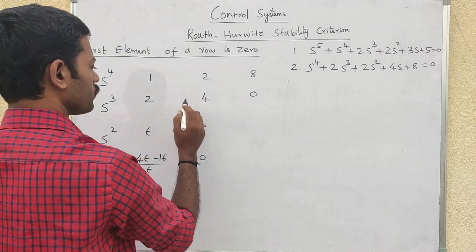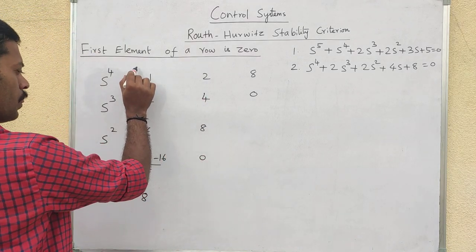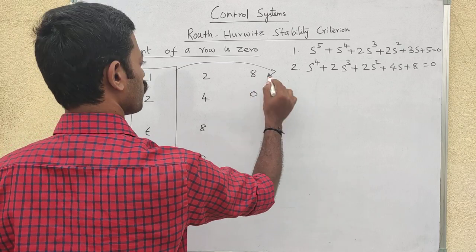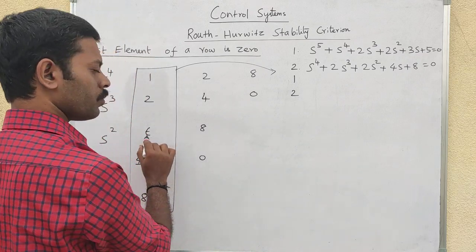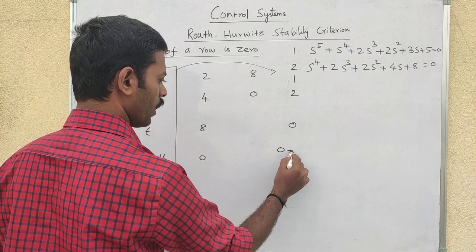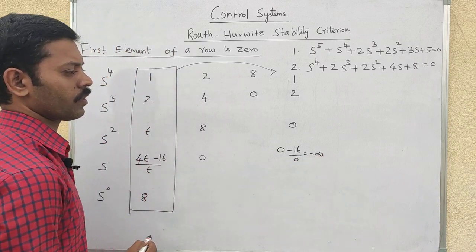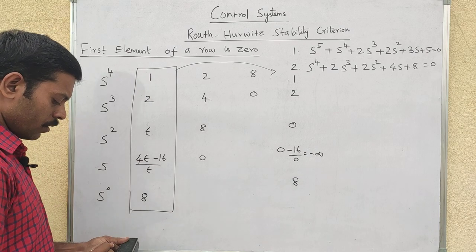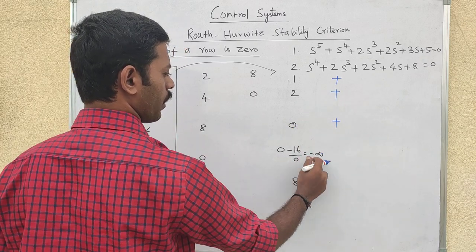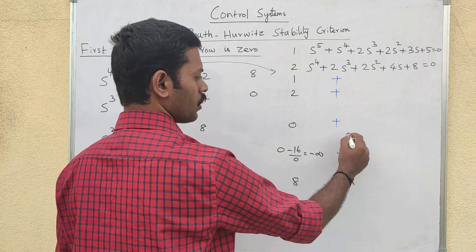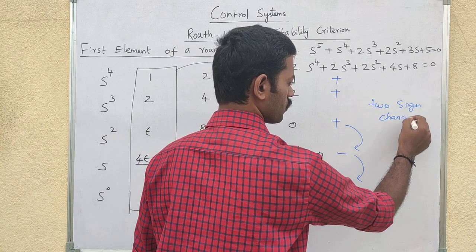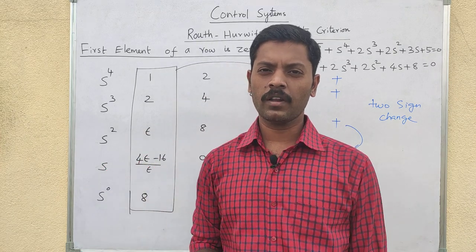The first element of that row is zero. As epsilon approaches zero, the term 0 minus 16 divided by 0 gives minus infinity. The next element is 8. So the first column signs are: plus, plus, plus, zero (plus), minus infinity (minus), then plus 8. There are two sign changes, so two poles are on the right side of the S-plane and the system is unstable.